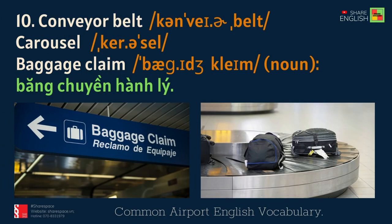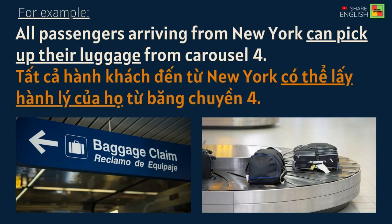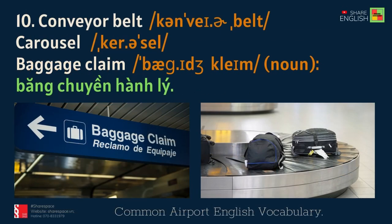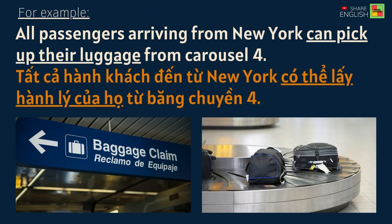10. Conveyor belt / Carousel / Baggage claim. For example: All passengers arriving from New York can pick up their luggage from Carousel 4.